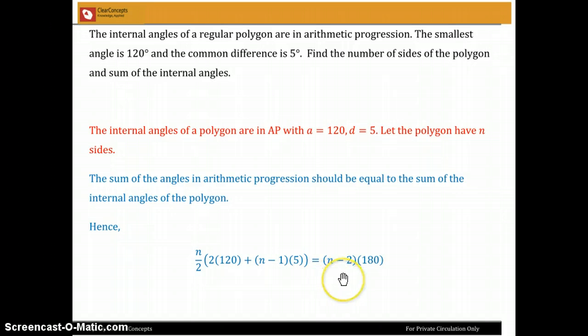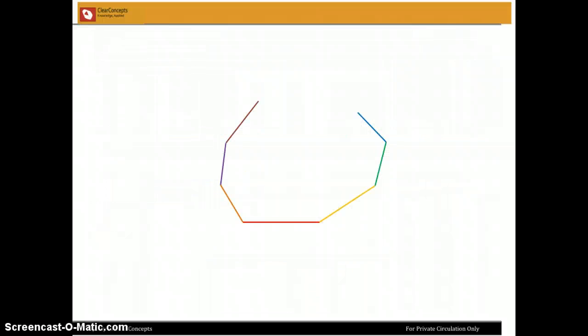The right hand side, n minus 2 into 180 degrees - I don't have the degrees sign - 180 is the sum of the internal angles of an n-sided polygon. So, let us see how we get that because I think that's where you are tripping up.